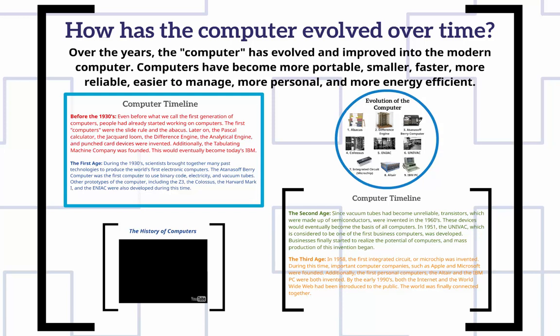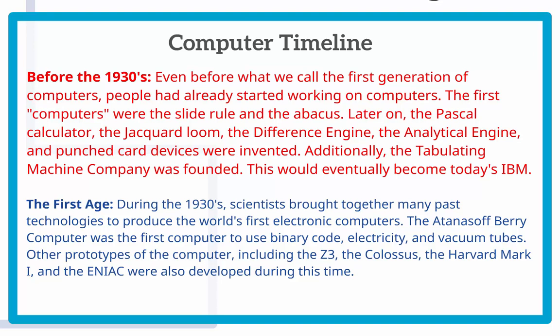How has the computer evolved over time? Essentially, they have become smaller and faster, more reliable, easier to manage, more personal, and more energy efficient. The first generation of computers were really more electromechanical devices. It wasn't until the 1930s that we began to build the first electronic computers, and those were created using vacuum tubes. The Colossus and the ENIAC were developed during that period of time.